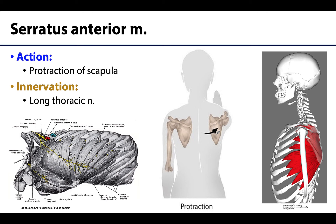The last axial appendicular muscle is the serratus anterior, named for its sawtooth appearance — little slips of muscle attaching on the ribs with an attachment to the anterior medial border of the scapula. It is a powerful muscle that causes protraction of the scapula, moving that medial border away from midline. Think of putting your arm out or punching anteriorly — this muscle is often called the boxer's muscle.